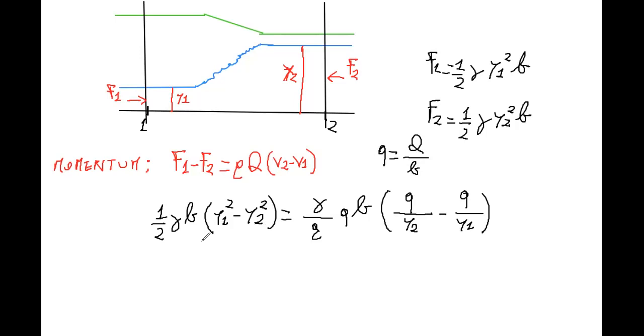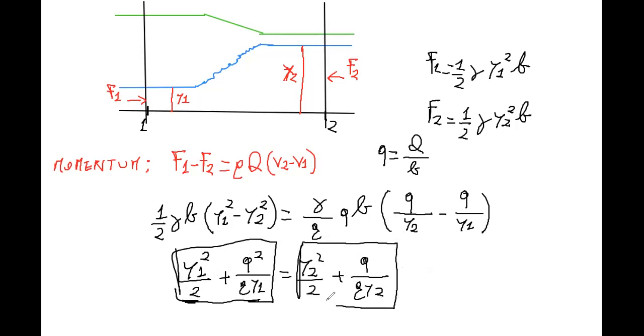From this equation we obtain y1 squared divided by 2 plus q squared over g y1 equals y2 squared over 2 plus q squared over g y2. This is just conservation of energy, it looks like conservation of energy where we have a pressure term and the velocity one. This quantity is called momentum, this is momentum in section one, this is momentum in section two.